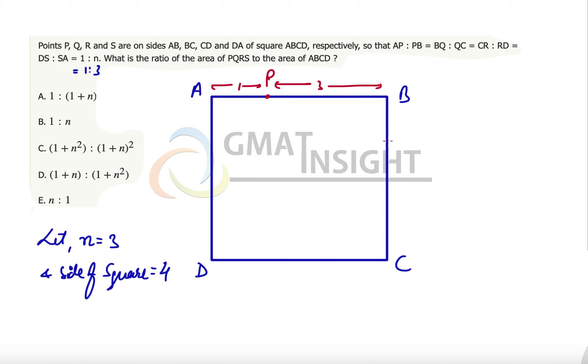BQ:QC—the same thing has to be done at this place. This is Q, and this distance is 1, the remaining distance is 3, because the side of the square is